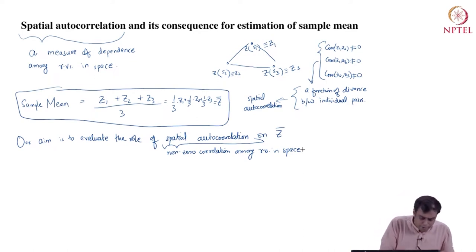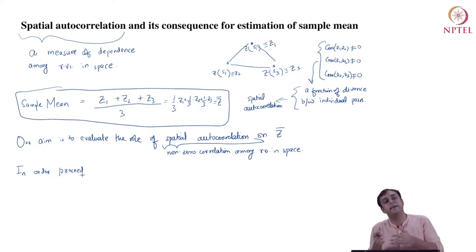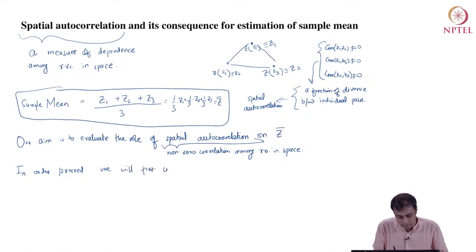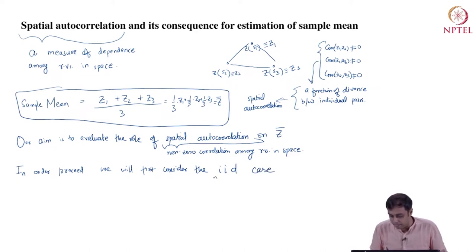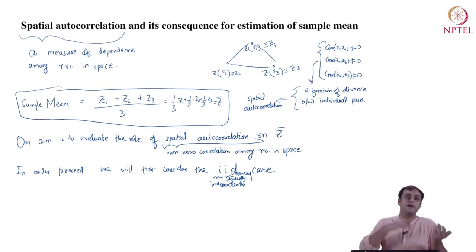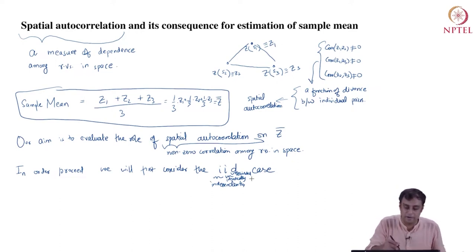In order to proceed, we will first consider the IID case. IID means independently and identically distributed random variables. Let us begin our evaluation of that case.